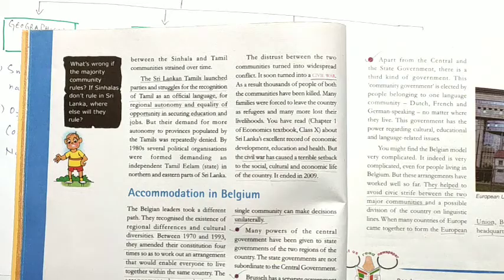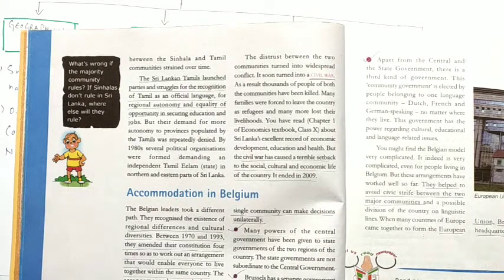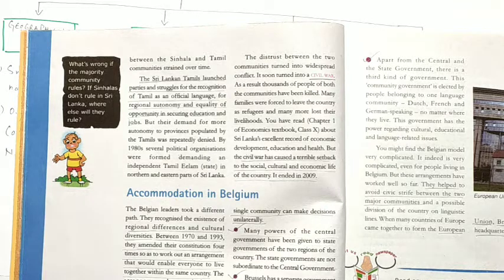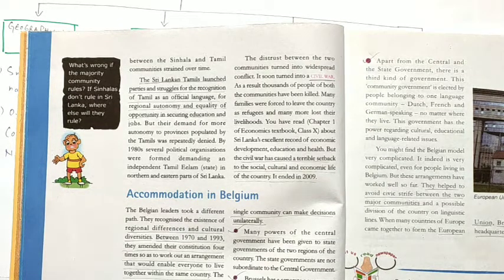Their demands were repeatedly denied. By 1980, several political organizations were formed demanding a separate Tamil state. The distrust between the Sinhala and Tamil communities grew to such an extent that it turned into a civil war, resulting in the loss of thousands of lives. Many families were forced to leave the country. Earlier, Sri Lanka had a good record of economic development, education, and health, but the civil war caused a terrible setback. The civil war started in 1983 and ended in 2009 — 26 years. Not sharing power in Sri Lanka led to civil war.